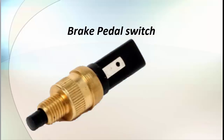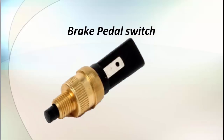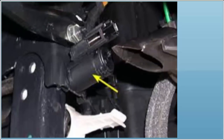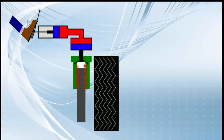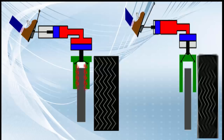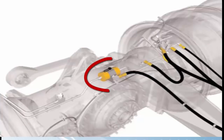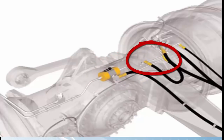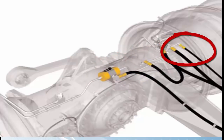Fifth, brake pedal switch. This is an on-off switch located in front of the brake pedal. The switch gives a signal when the brake is pressed or released. The transmission converter clutch disengages when the brake is applied and engages when the brake is released.